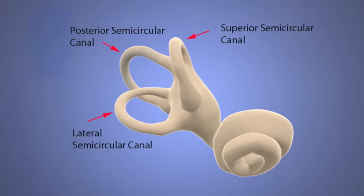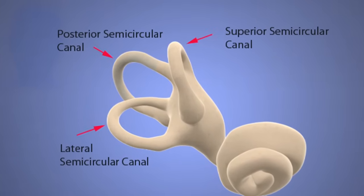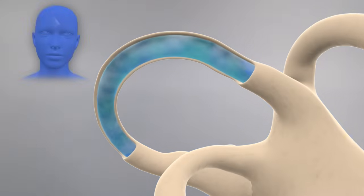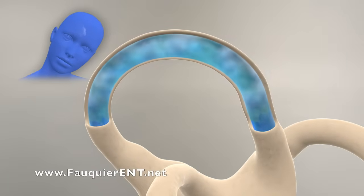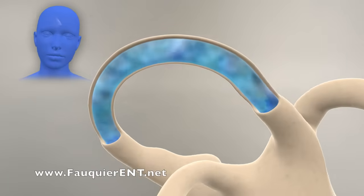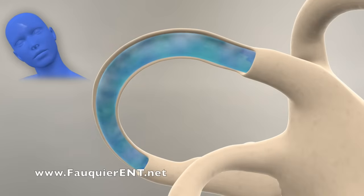Each semicircular canal is responsible for sensing a particular head direction. Each semicircular canal is filled with fluid, and when displacement of this fluid occurs within the canal, nerve signals are sent to the brain informing which direction the head just turned.